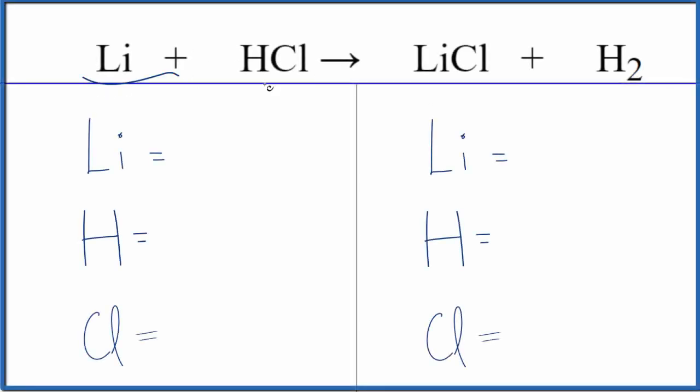Let's balance the equation Li plus HCl. This is lithium plus hydrochloric acid. This is a single displacement reaction. The type of reaction is single displacement because the lithium displaces the hydrogen. The hydrogen ends up by itself and the lithium is now with the chlorine.